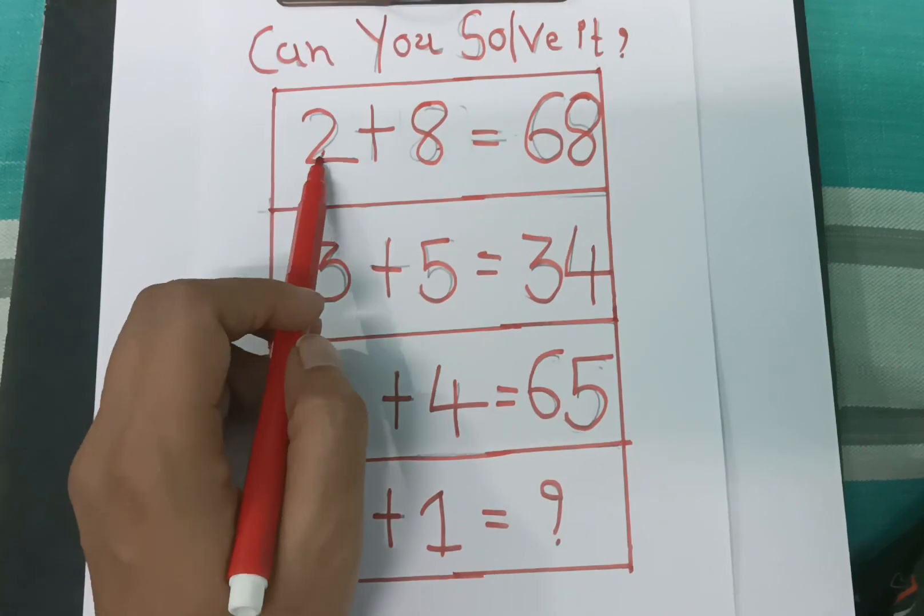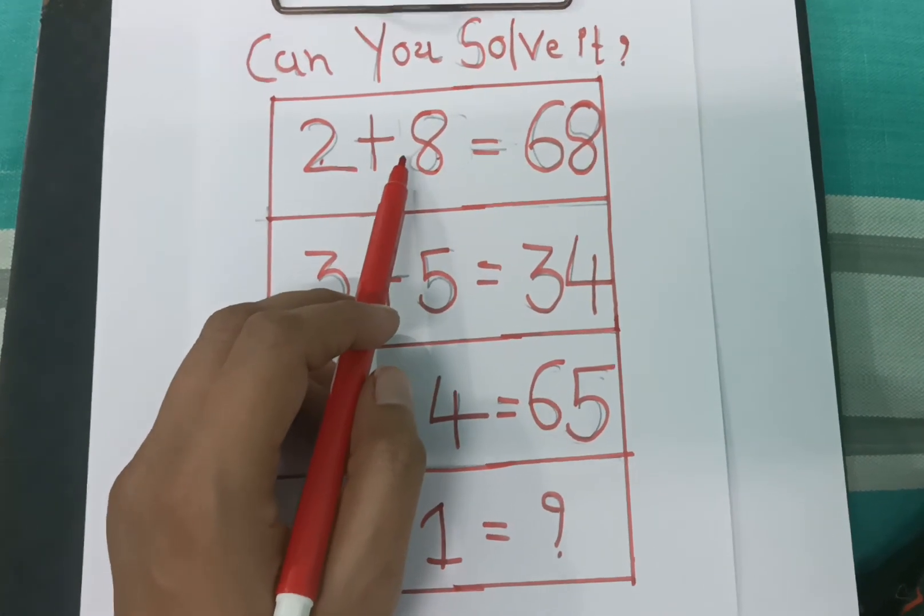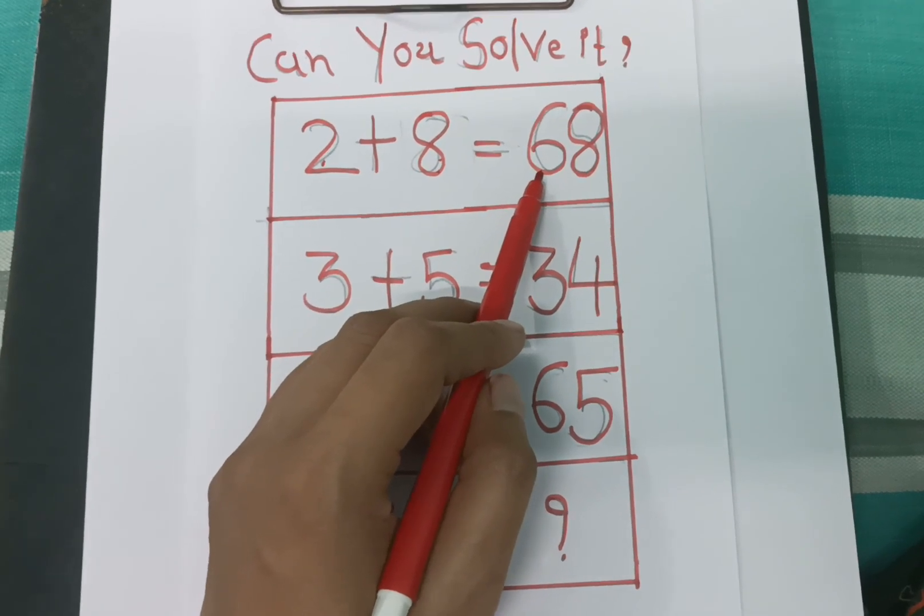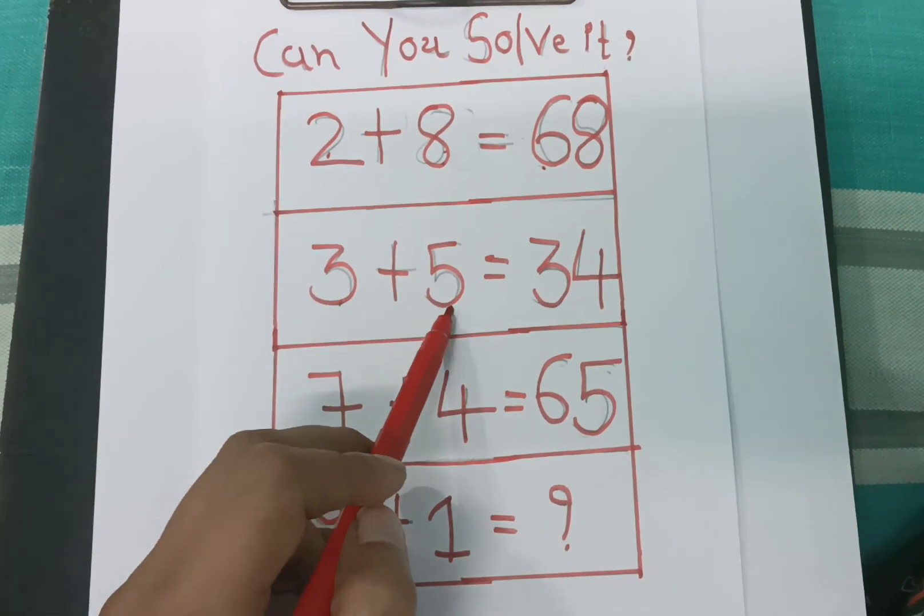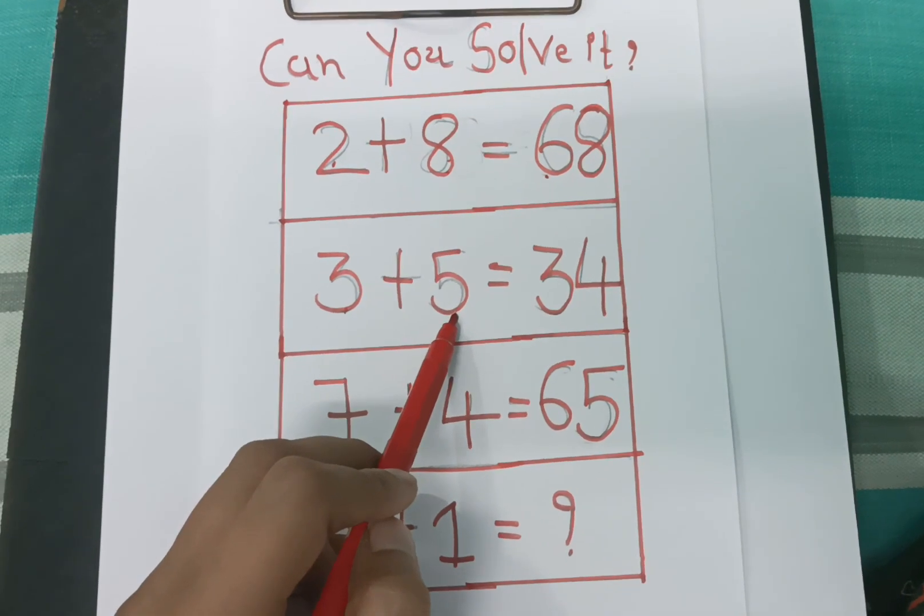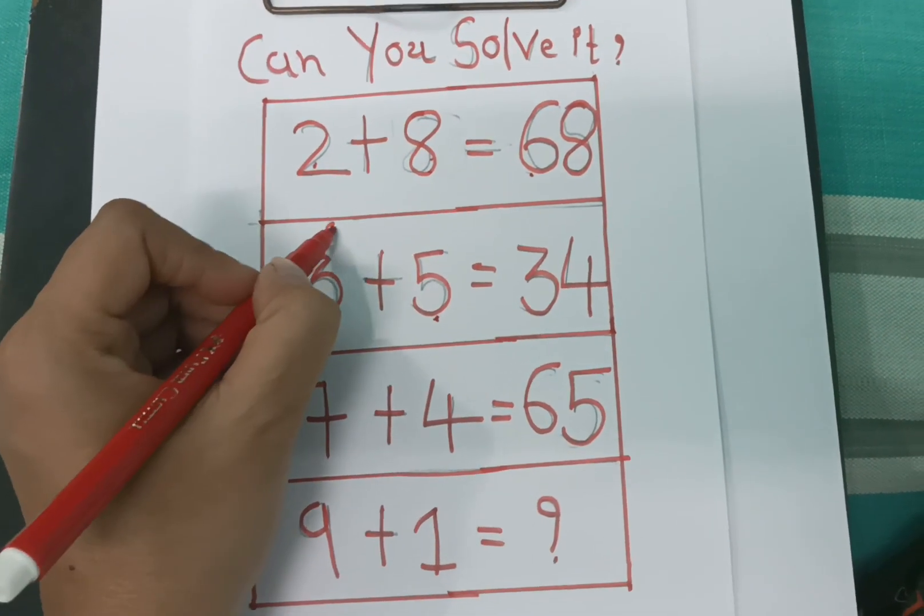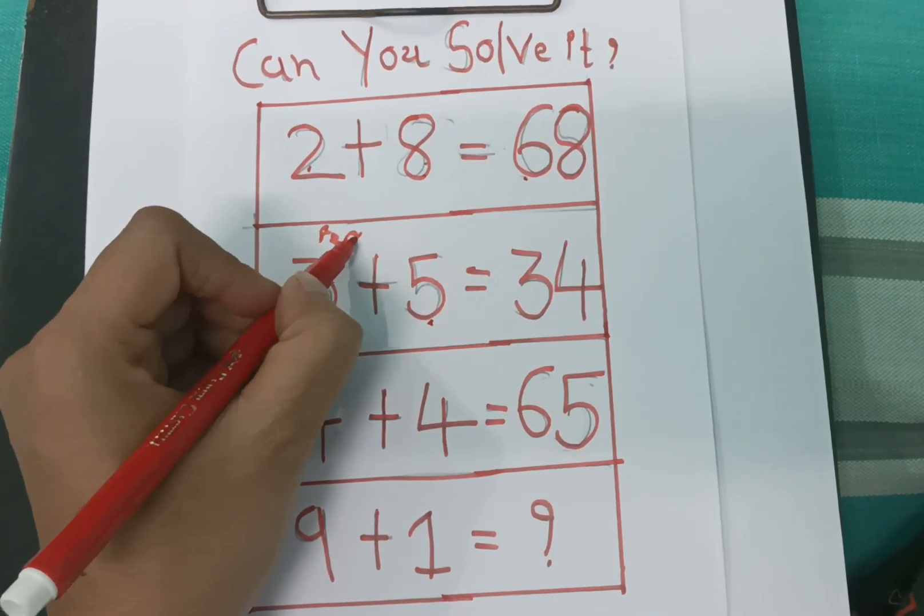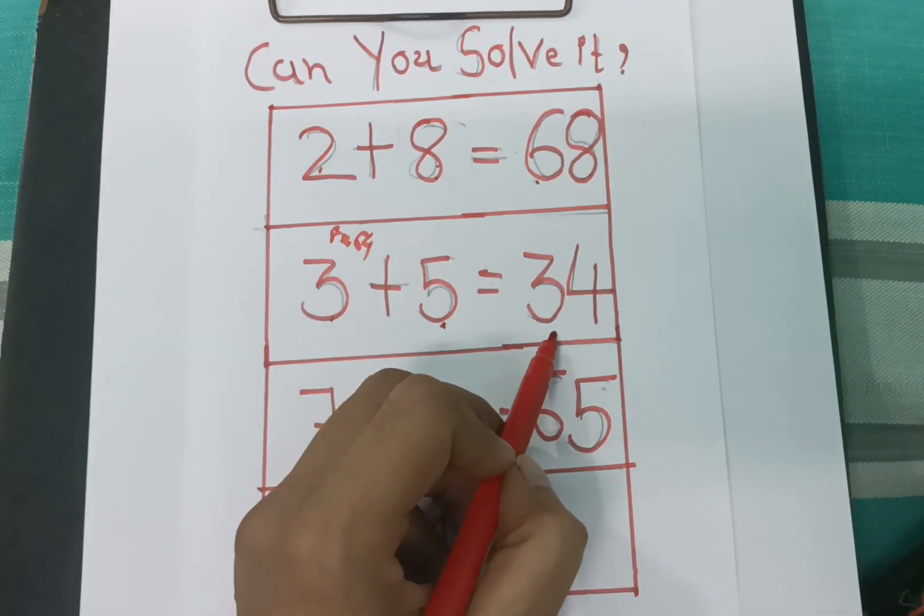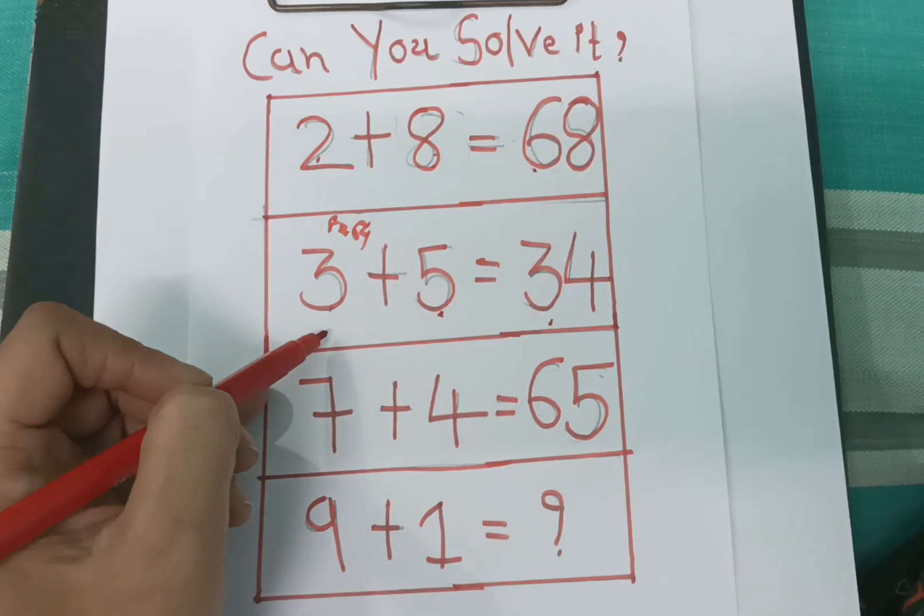See, if we add 2 plus 8, then 10, and 10 square is 68? No, 10 square is 100. 3 plus 5, that is 8, and 8 square is 64, but here it is 34, so this is not possible.